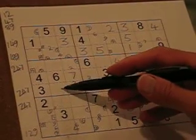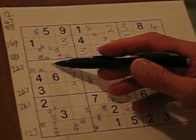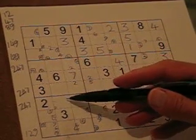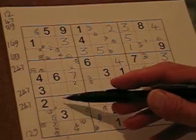So this square, this square, and this square have to contain the numbers 1, 8, and 9. We don't know what order they're in, but they have to contain that.